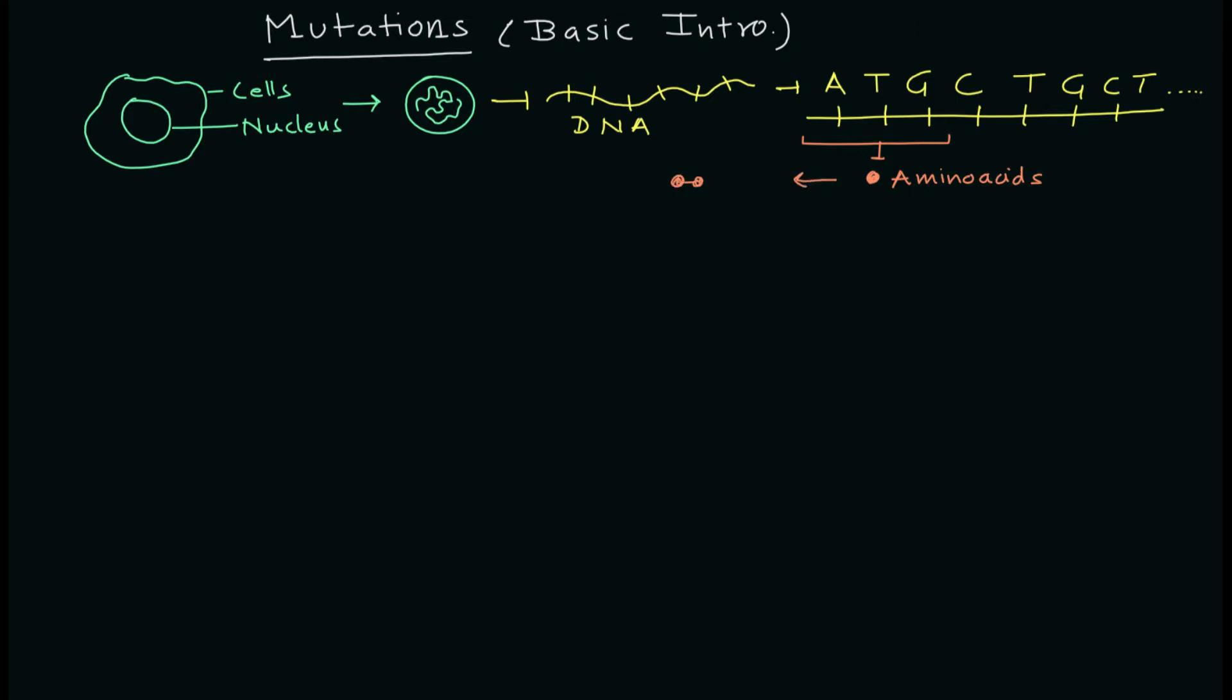In that sequence you have the triplet code that will code for a specific amino acid. Then you will have a lot of amino acids bound together that will fold to form a protein molecule, and that protein molecule will have a certain function that will lead to a particular character or phenotype.